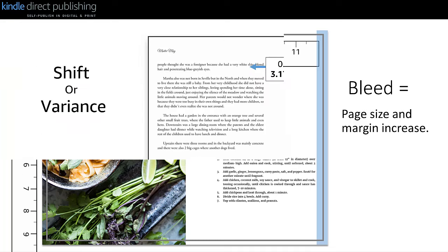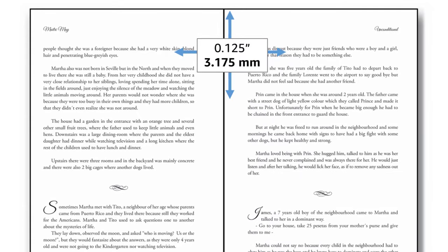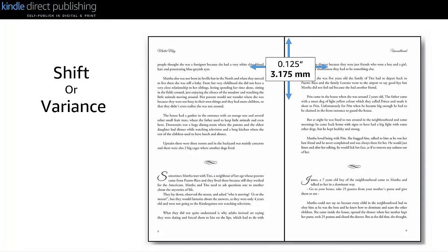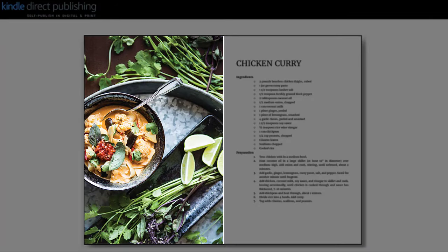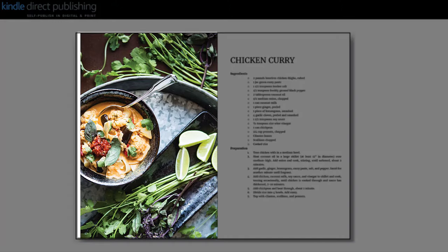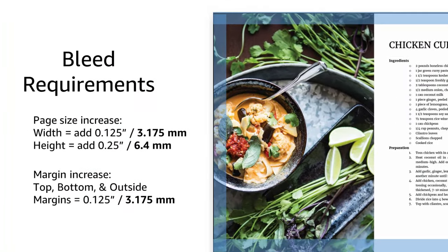Why does this matter? KDP allows a shift or variance of 0.125 inches in any direction during the manufacturing process. So even if you place your image right on the very edge of the page in your interior file, there is a chance it will shift during manufacturing. Instead of the image reaching all the way to the edge of the page as shown here, you could end up with a white line at the edge of the page where you didn't want any white space. To set your file with bleed, KDP requires that the page size be increased by 0.125 inches on the top, bottom, and outside edge.